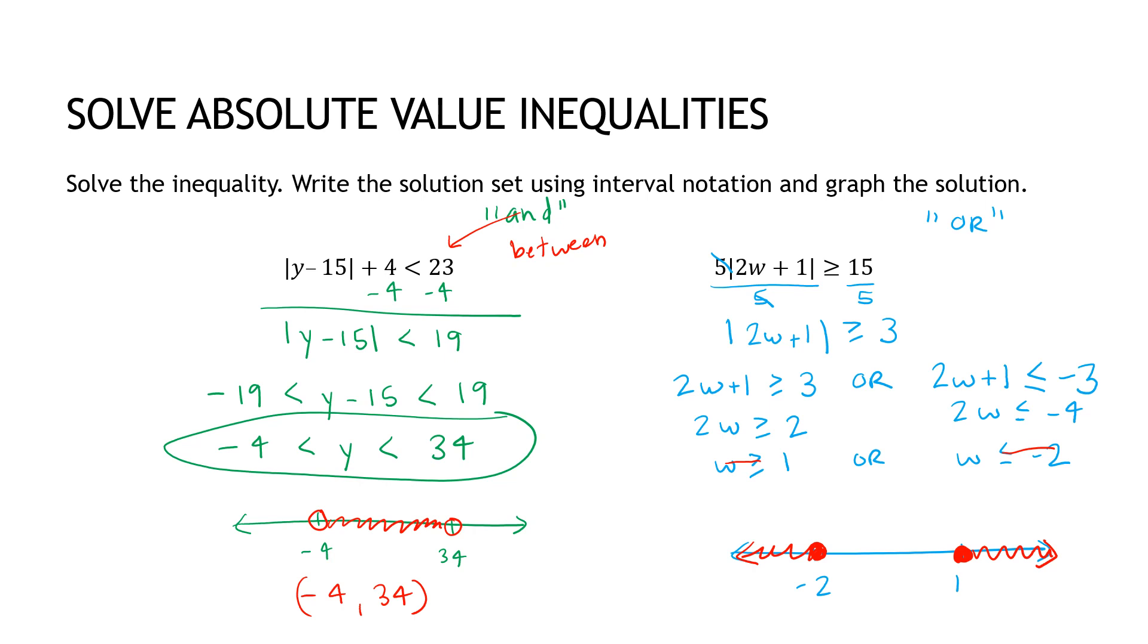In interval notation, that would be negative infinity up to negative 2. Not including infinity, but including negative 2. And also, again, union from 1 to infinity. Again, 1 is included. Infinity is not.